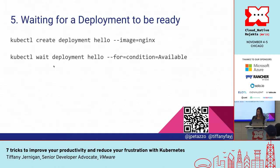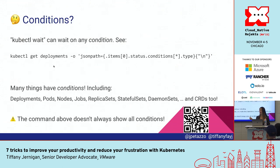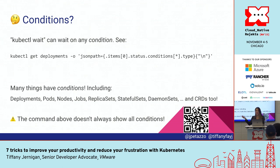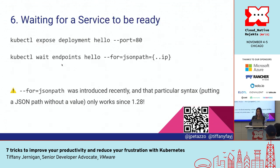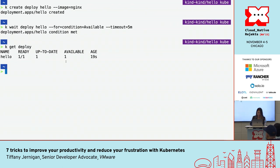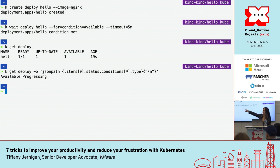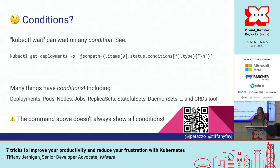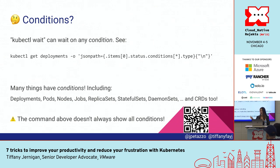Who here has done -o jsonpath? It lets you go through your JSON and pick a specific field — for instance, you can go through items, status, and get the different types of conditions. Based on that, you can figure out what types of conditions you can wait on for a specific resource. I can see that I can wait on both 'available' and 'progressing.' There are different ones for different resource types. For jobs, there are some things that don't specifically show up.